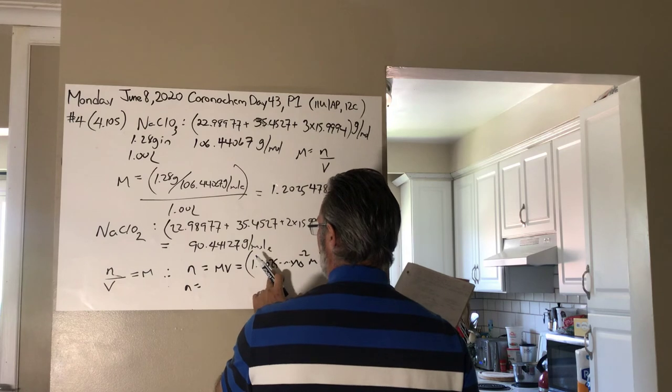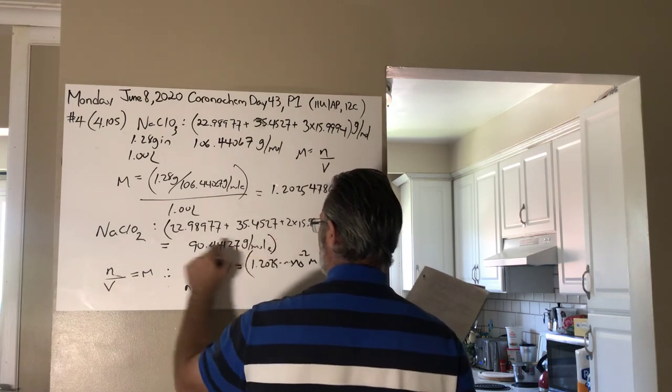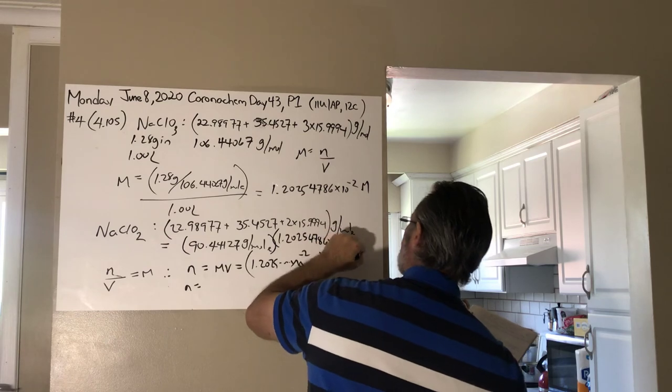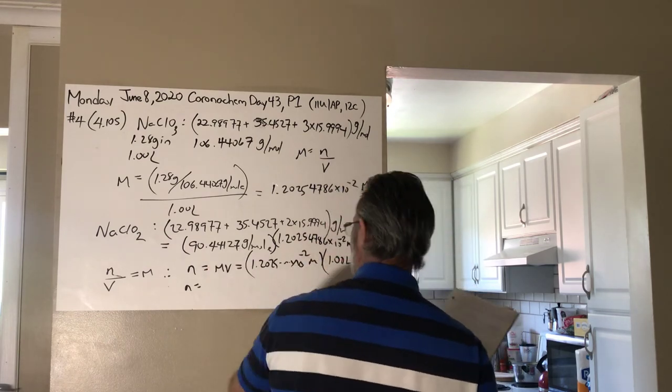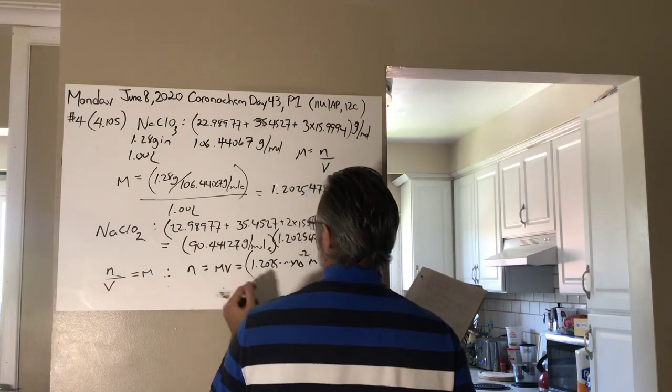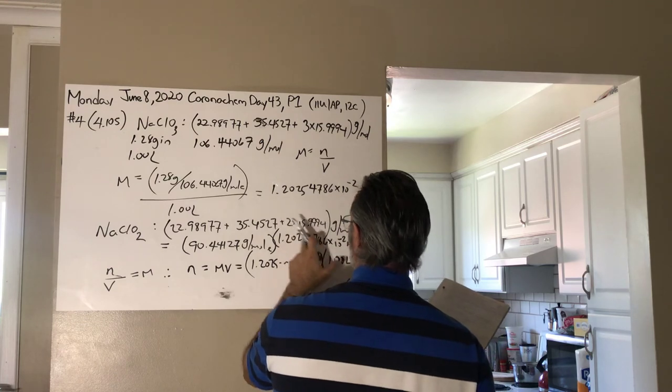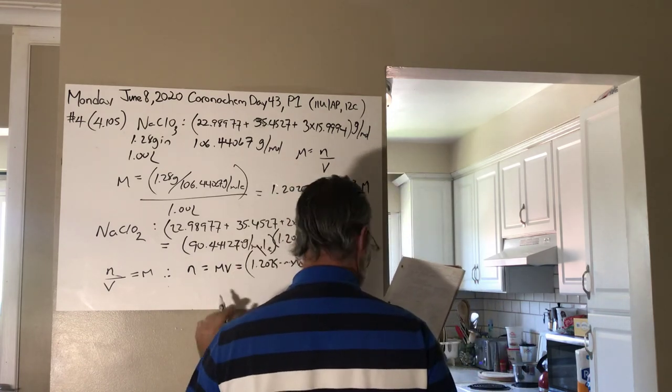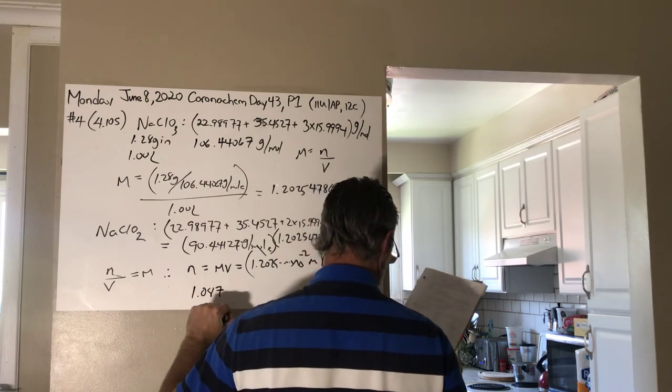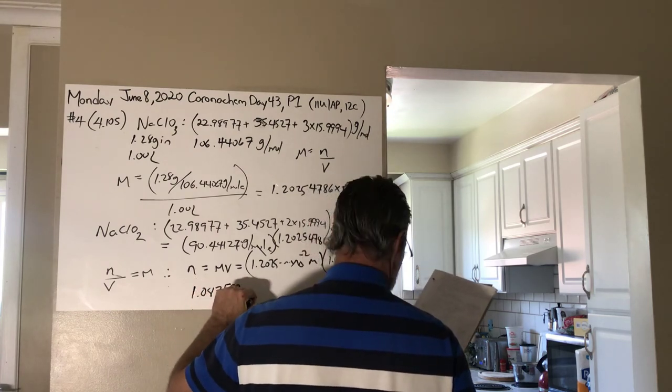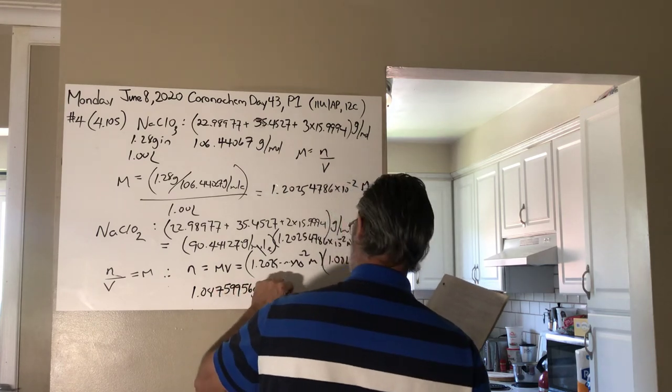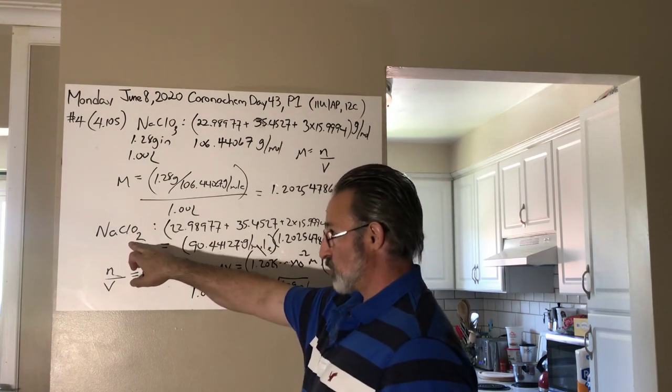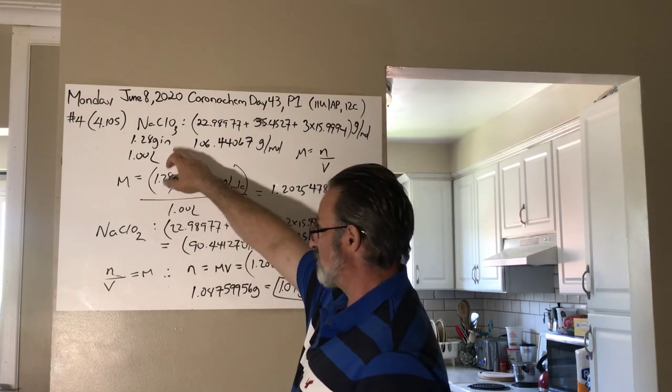So that's the number of moles you need. If you need that many moles and you've got that many grams per mole, you're just going to write 1.20254786 times 10 to the minus 2 moles, times the grams per mole. Grams per mole multiplied by moles will cause moles to cancel. You'll get an answer in grams. Your answer in grams turns out to be 1.08759956 grams, or after sig figs, you round it down to 1.09 grams. So you need 1.09 grams of sodium chloride to give you a solution with the same molarity as 1.28 grams of sodium chlorate.